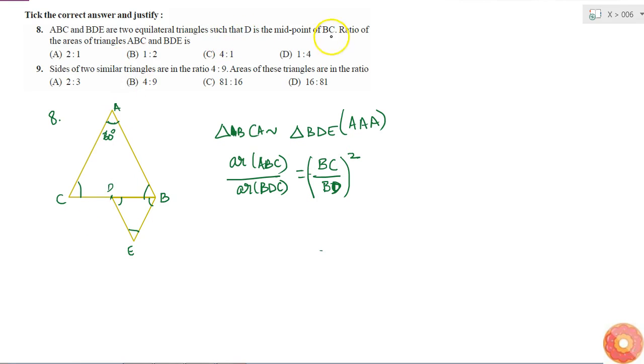So now D is the midpoint of BC. What does that mean? That means that BD is equal to half of BC or BC by BD is equal to 2. So this is equal to 2 squared, which is 4 by 1. Or I can also write it as 4 is to 1. Therefore, my answer is C.